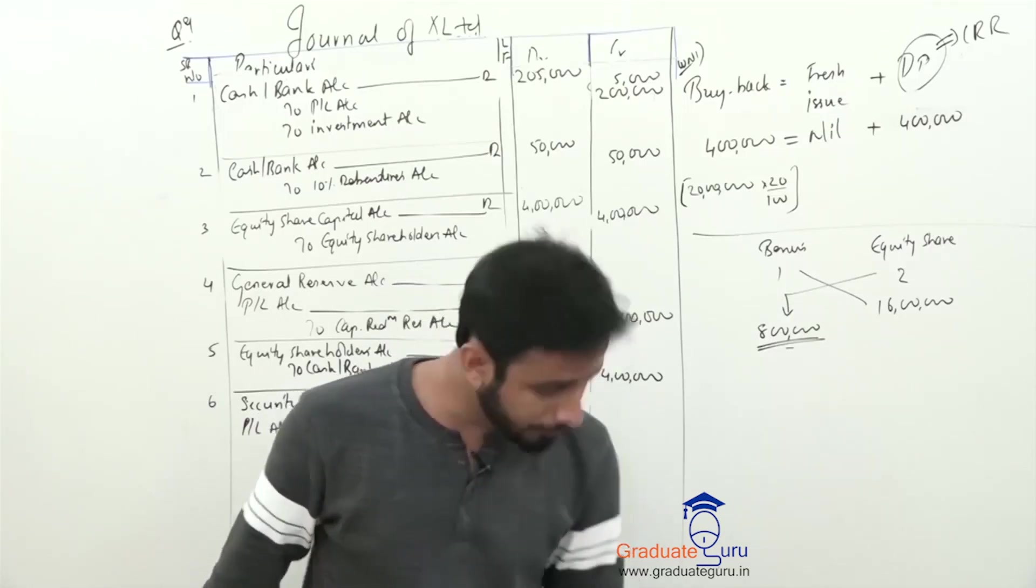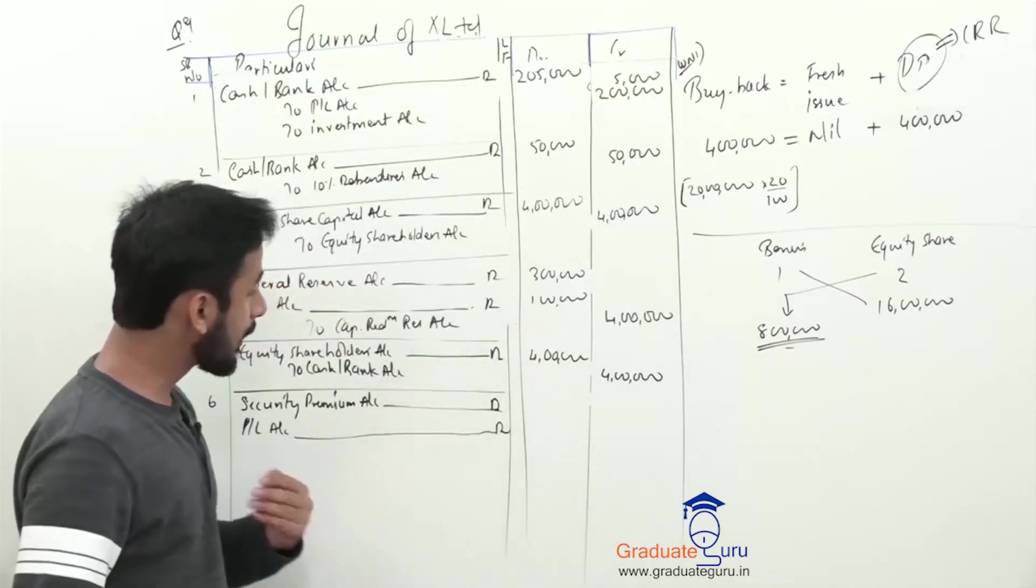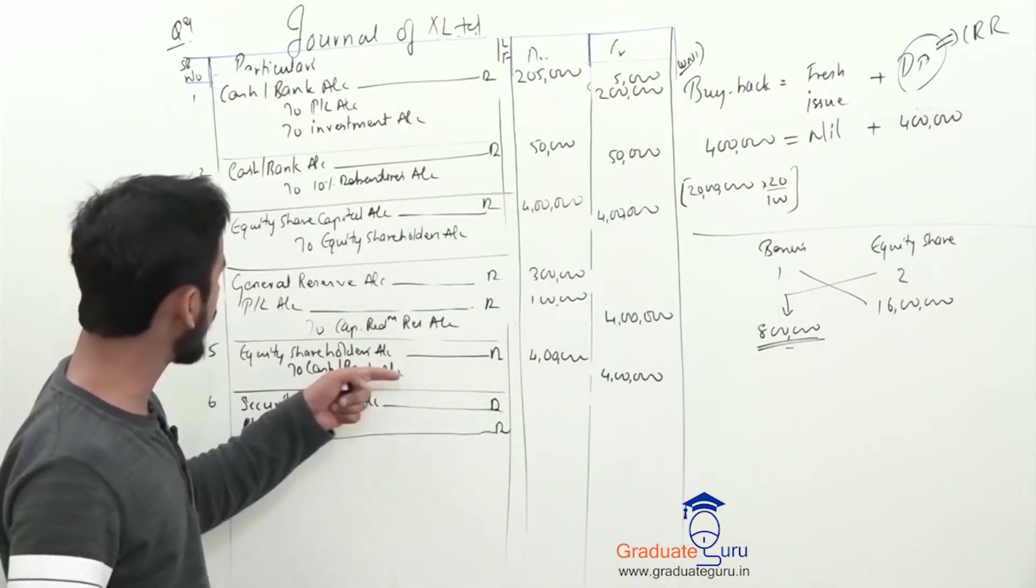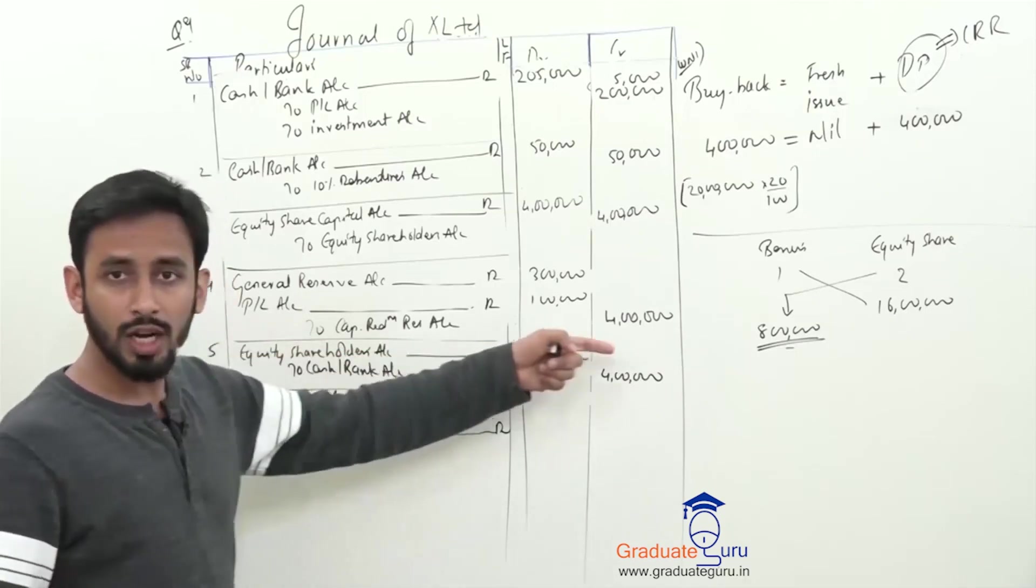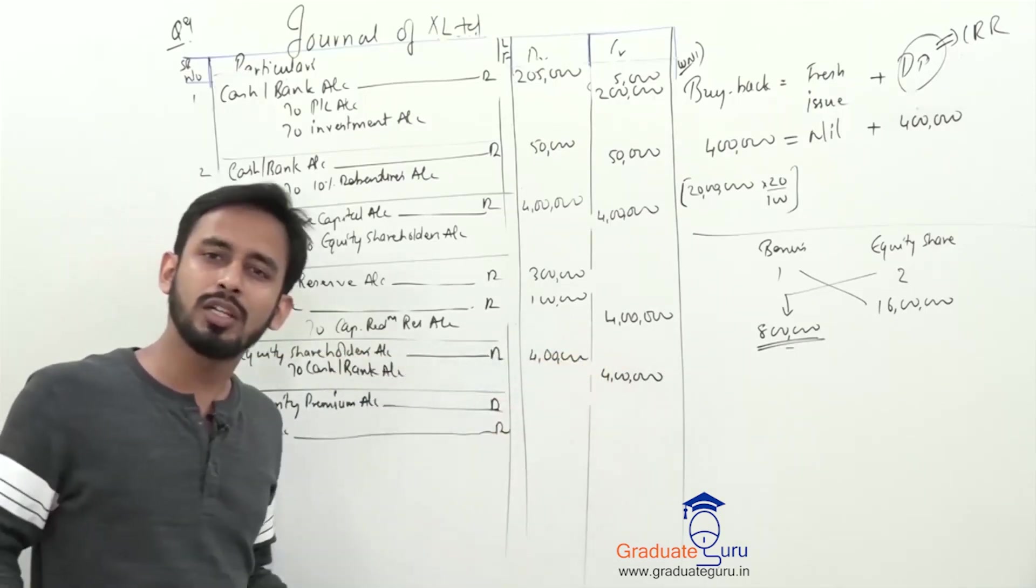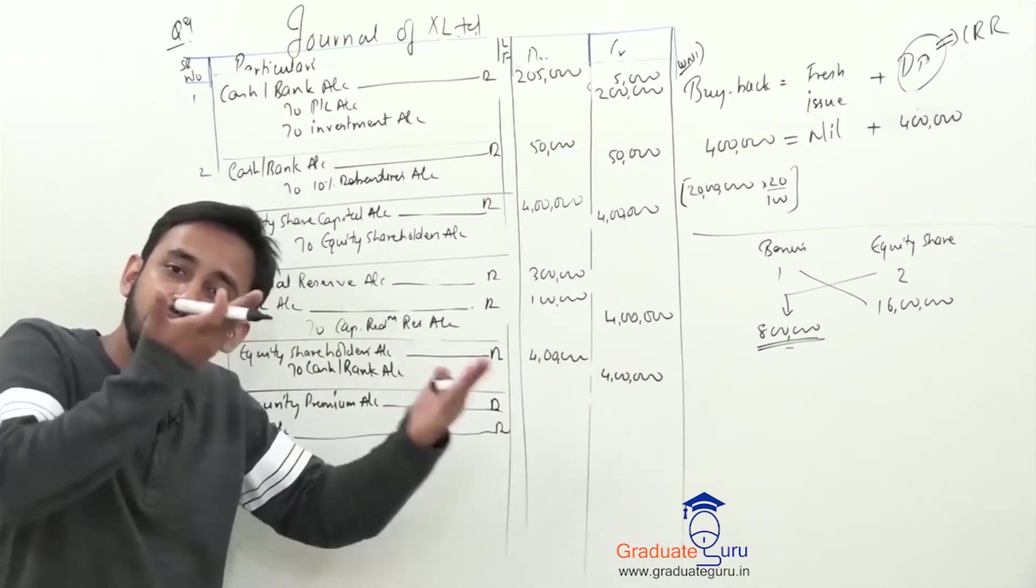Where is it? Here. Also, what do I have? Capital redemption reserve. 4 lakhs. Why did you make it? Why did you make it? For the bonus shares, we made it.